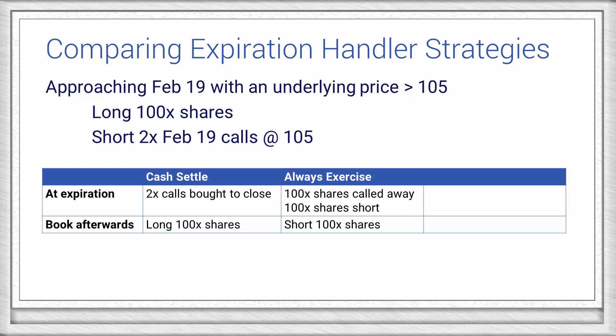If we use the Always Exercise strategy instead, then both calls would be allowed to be assigned. The first would call away our 100 shares, and the second would force a short 100 shares. If we use the Exercise if Covered strategy, then the first call would be allowed to call away our shares, and the other would be bought back to close.